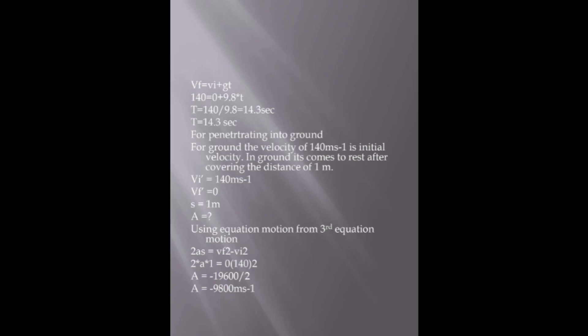Now find acceleration using equation of motion. From third equation of motion, 2AS equal to velocity final squared minus velocity initial squared. 2 into A into 1 equals 0 minus 140 squared. A equals minus 9800 meter per second squared. Our final answer is obtained.